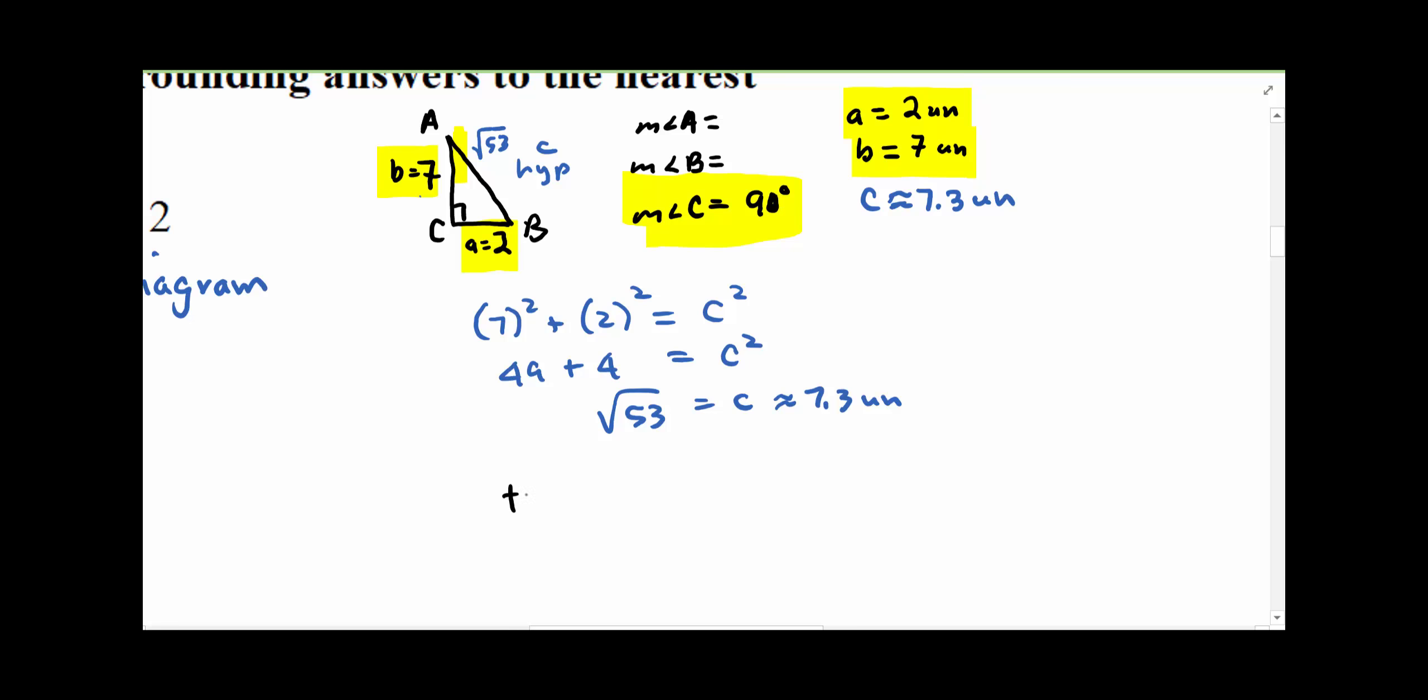So tangent of angle A is 2 over 7, this is opposite over adjacent, and we're just going to take the arc tangent, or inverse tangent of both sides...